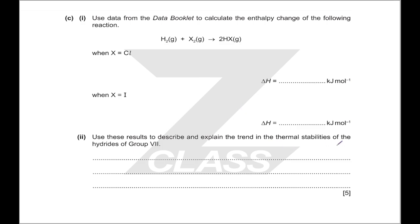For 'describe and explain the trend in thermal stabilities of the hydrides of group seven': the hydrides get weaker as you go down the group — the bond strength decreases, and the backwards reaction becomes easier to do. As the enthalpy of the bond gets weaker, it's easier to split them apart; less energy is needed, so the thermal stability is lower. This is for the same reason as before: the atoms get bigger and the attraction gets weaker.